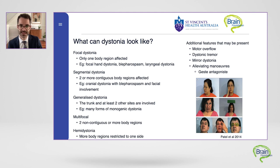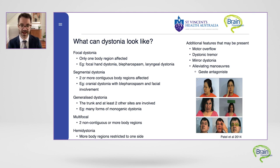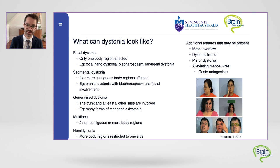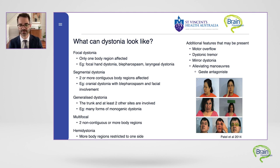One really interesting phenomenon is the geste antagoniste, which translates from the French as an antagonizing gesture. This is a sensory trick that individuals develop where touching a body part affected by dystonia can actually markedly reduce their dystonia. In some individuals, even thinking about performing that action can have a drastic benefit, likely due to that sensory feedback mechanism dampening their motor outflow.